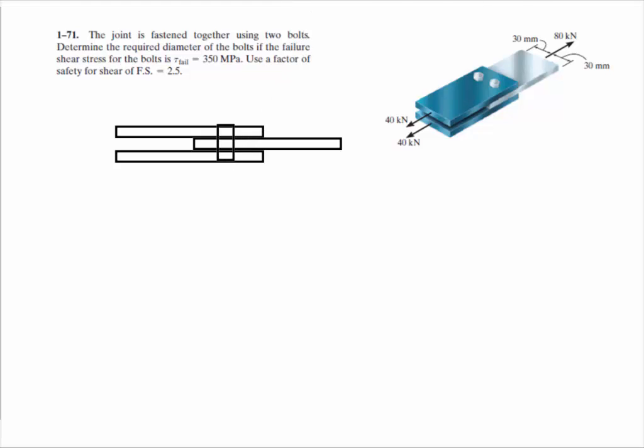Now you have your choice. You have 40 kilonewtons coming this way, 40 coming this way, or you have 80 coming this way. If you want, you can just use this member here, and you'd only be concerned about this upper part. You'd be shearing across one face. If you're going to use the 80, then you're going to be shearing across this face and this face.